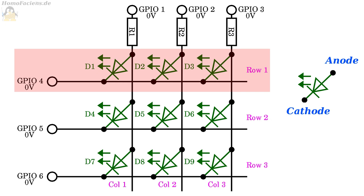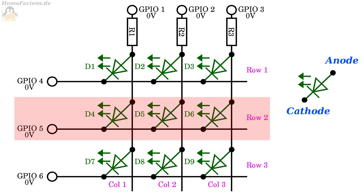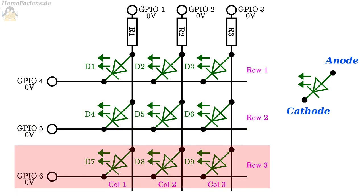The cathode sides of LEDs 1, 2, and 3 are all connected directly to GPIO 4, which is also true for LEDs 4, 5, 6 and GPIO 5, as well as LEDs 7, 8, 9 and GPIO 6.